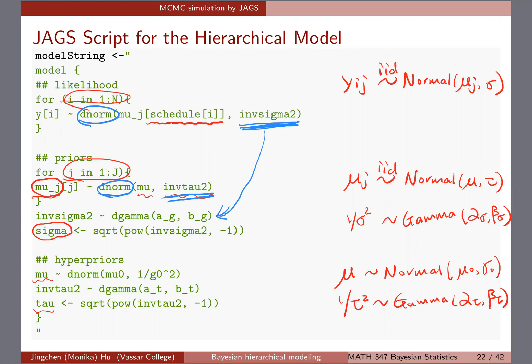But later, say, I actually want to know what sigma is. And in this case, so this is in the likelihood, right? We are using one over sigma squared, because that's what the precision that is needed for the dnorm function. But then down here, I'm trying to give a prior for this one over sigma squared to be a gamma.